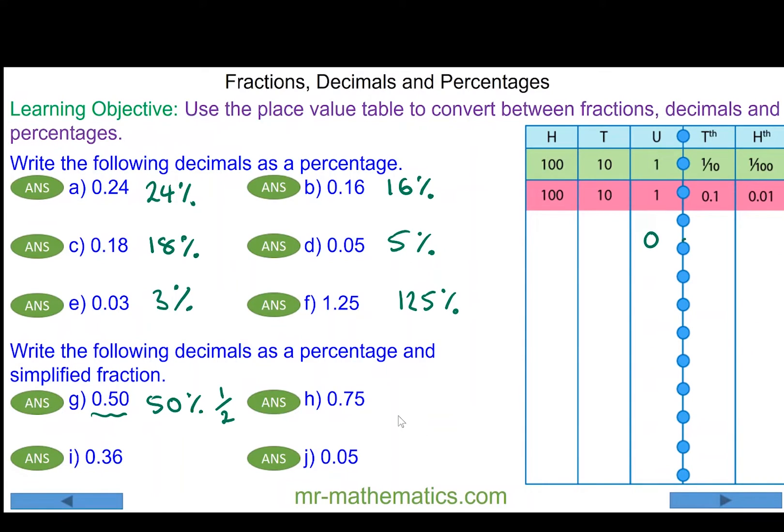For question h we have 0.75, which we've learned is seventy-five percent. And as a fraction of 100, we can divide both by the highest common factor of twenty-five, which gives us three over four, so three quarters.